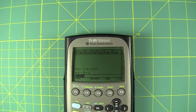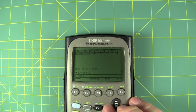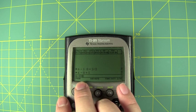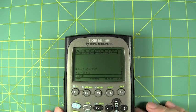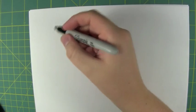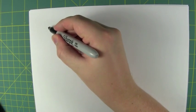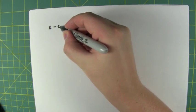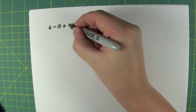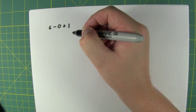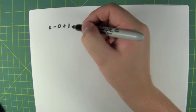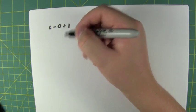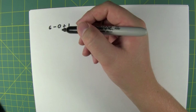And where people seem to be getting tripped up on this is they think that this plus sign here—well, here let's just move to paper, it'll be easier to show you. Okay, all right, so I'm going to take this: we go six minus zero plus one. In theory you do the addition and then the subtraction.